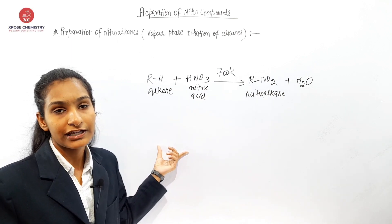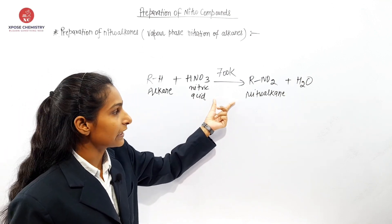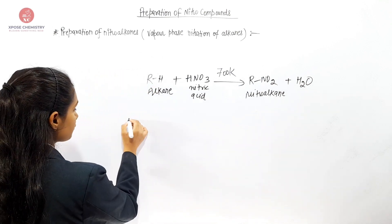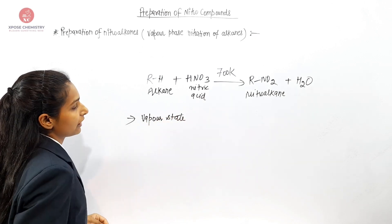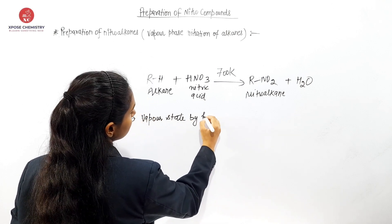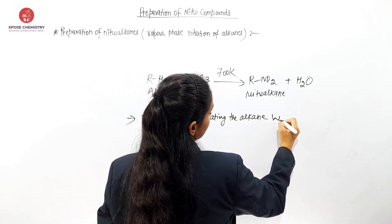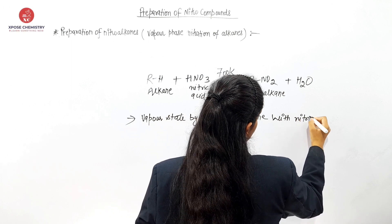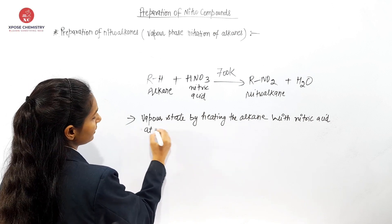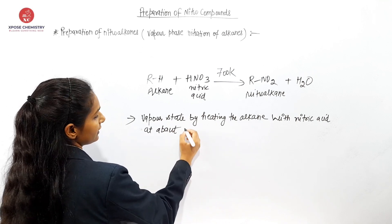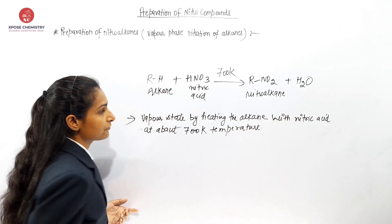So the process is carried out in vapor state. The alkane reacts with nitric acid at 700 Kelvin, and the product formed is nitro alkane. By heating the alkane with nitric acid at about 700 Kelvin temperature, the formation is nitro alkane.